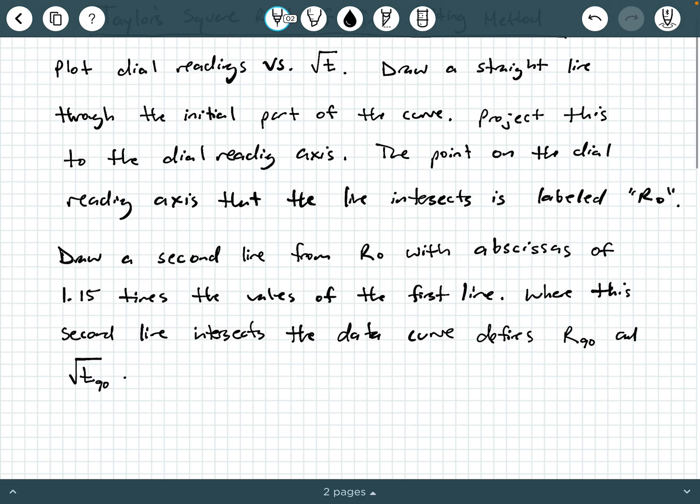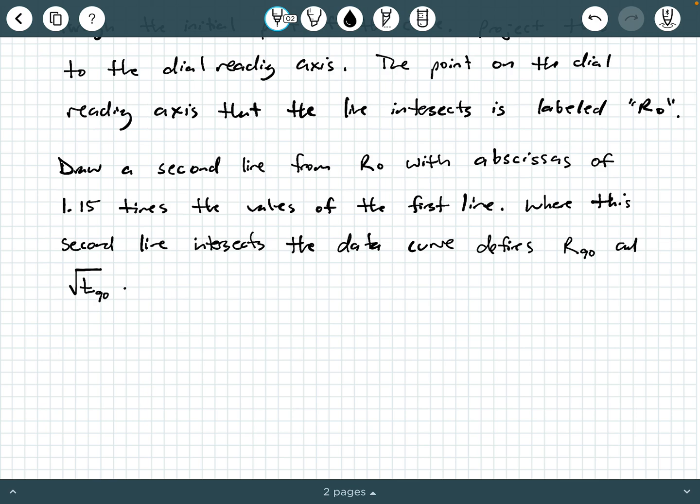And so from a time factor handout, we know capital T90 is 0.848. So then what you can do is you can say the coefficient of consolidation, you use the 90% consolidation data and you say CV equals T90 times HDR squared over little T90. And so, of course, this would be 0.848 HDR squared over little T90.